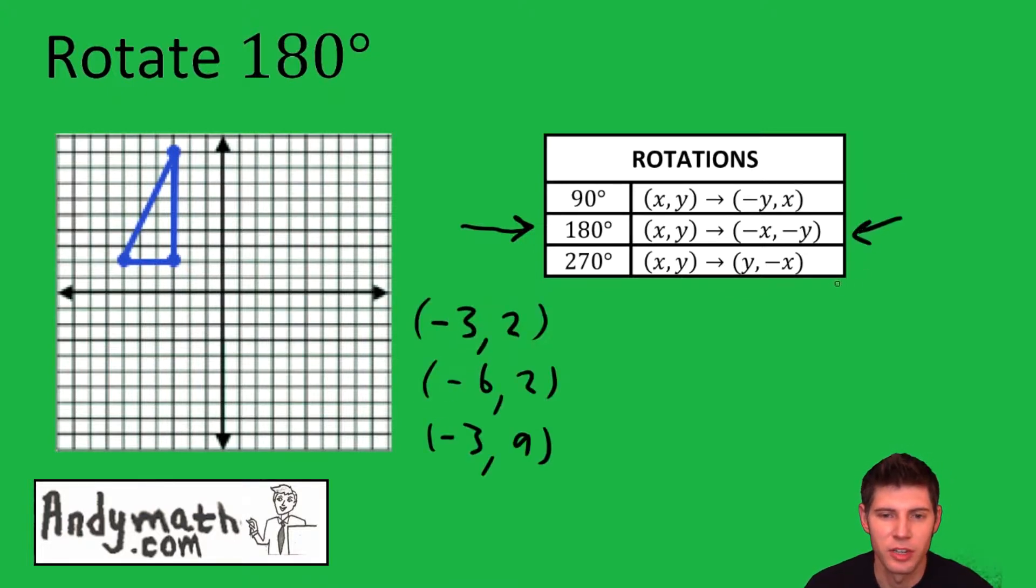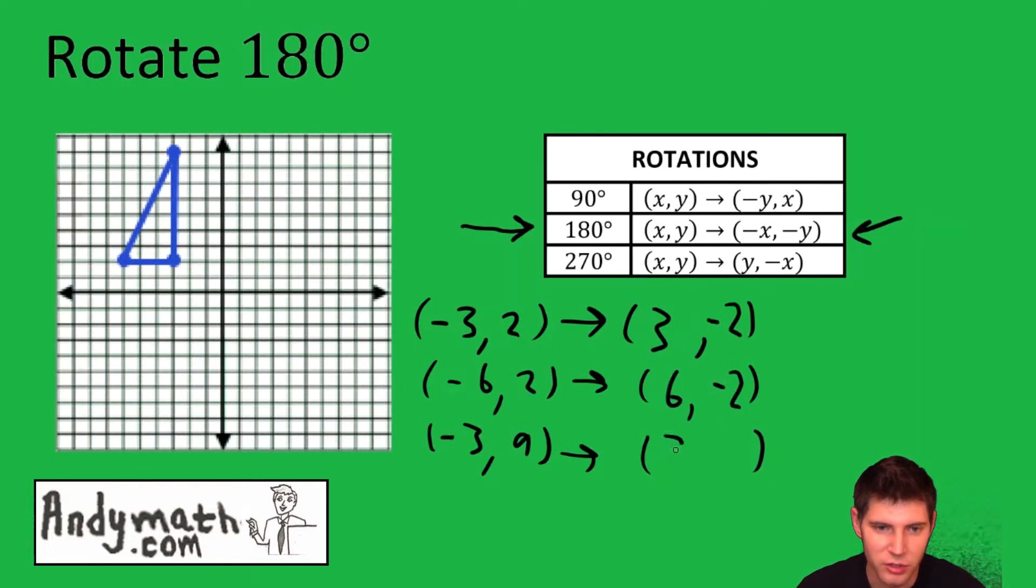Now we want to map each of these using this 180-degree rule. So it says make the x negative and then make the y negative. So we're literally going to make the negative of each of them. And since this is a negative three, it's going to become a positive three. So it means change the sign. This will be negative two. This will be positive six, negative two, and positive three, negative nine.